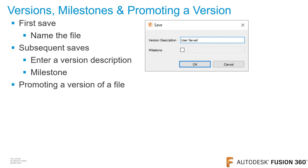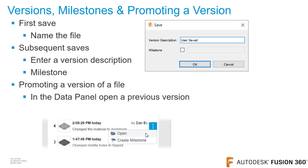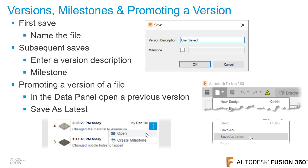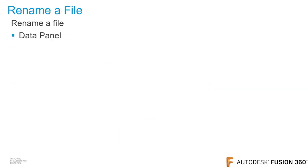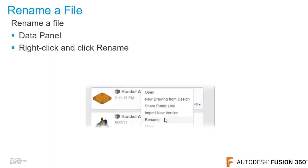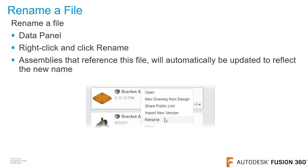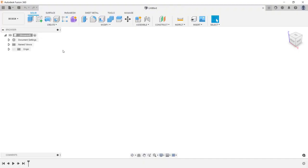As you're working, you may want to go back to a previous version of a file. You can do this by promoting a version. Open the data panel, click on the three dots to the right of the version you want to promote, and click Open. Verify this is the version you want to promote, then go to the File menu and click Save as Latest — a new version of this file will be created. If you need to rename a file inside of Fusion 360, open the data panel, right-click on the file you want to rename, and click Rename. Assemblies that reference this file will automatically be updated. Now let's get started inside of Fusion 360.